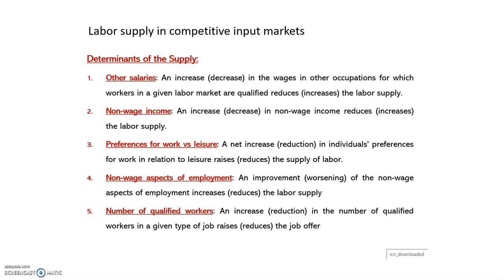The third determinant is preferences for work over leisure. If there is a net increase in individual preferences for work relative to leisure, it increases the supply of labor. If people prefer to work instead of having leisure — perhaps because wages in the sector have increased or for other reasons — the supply of labor will increase.